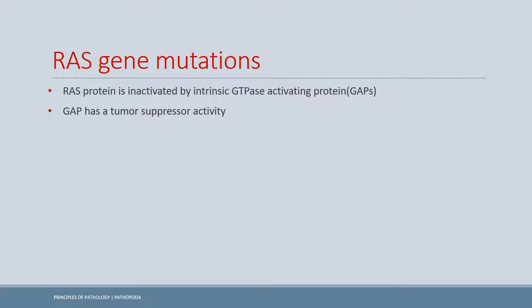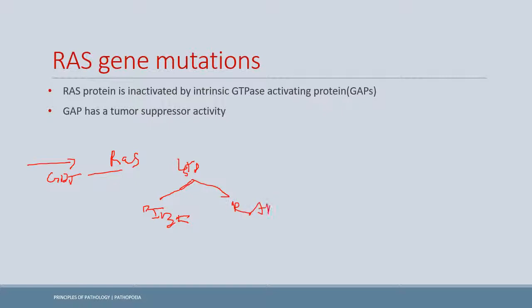For RAS protein activation, normally GDP is attached to RAS and it is in an inactivated state. When tyrosine kinase causes GDP-to-GTP conversion, GTP attaches to RAS and activates it. Activated RAS then activates two pathways: the PI3K pathway, which goes to AKT and then mTOR, and the RAF pathway, which leads to activation of MAPK — both ultimately causing cell growth.